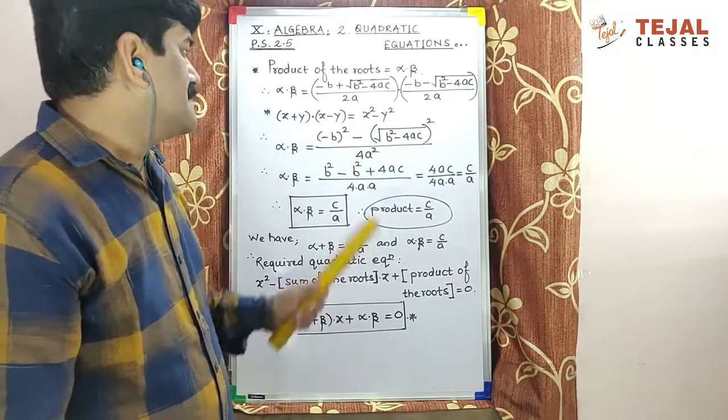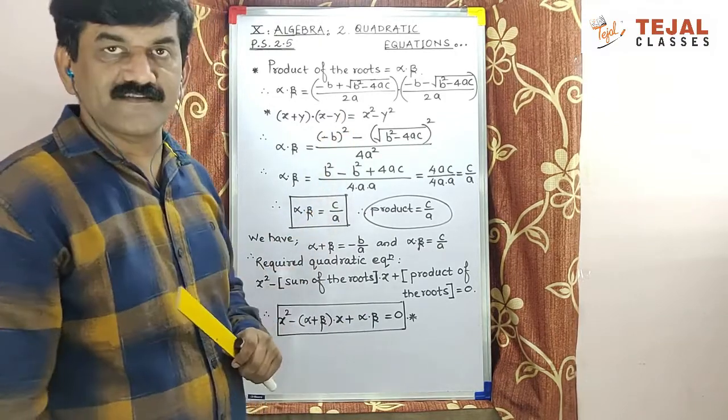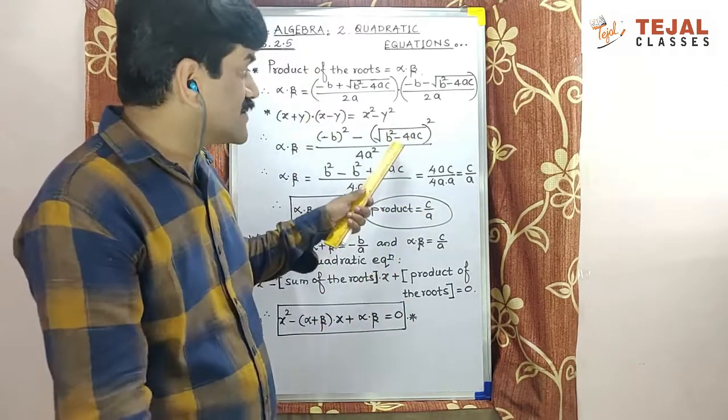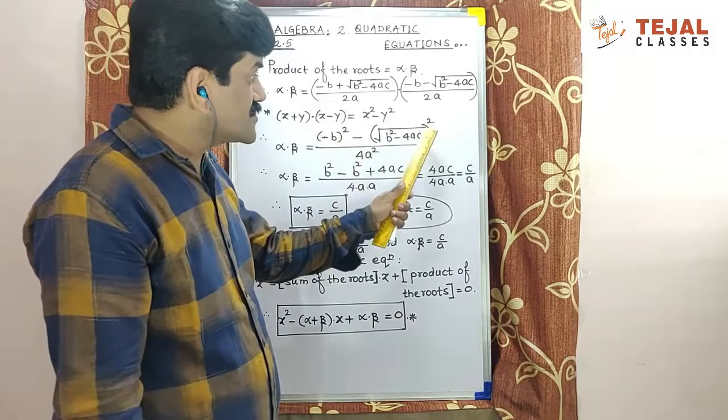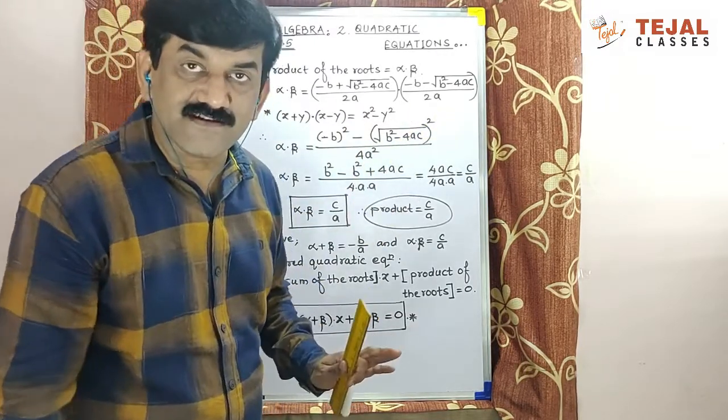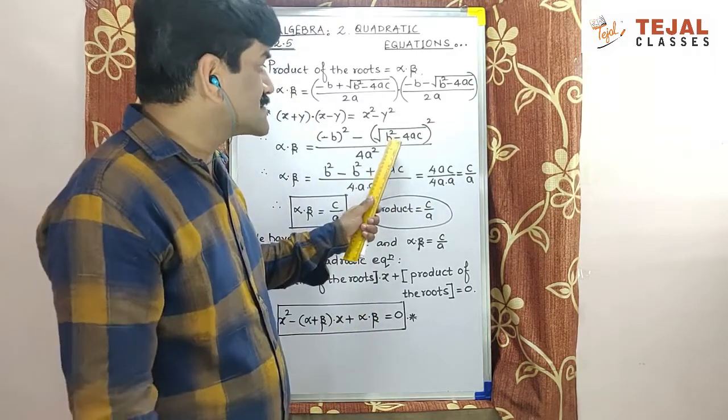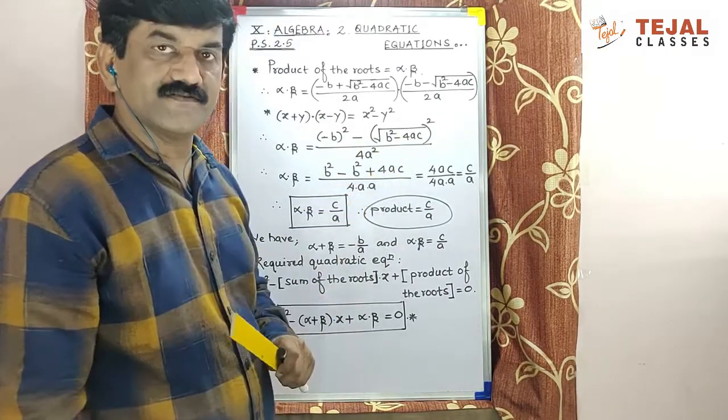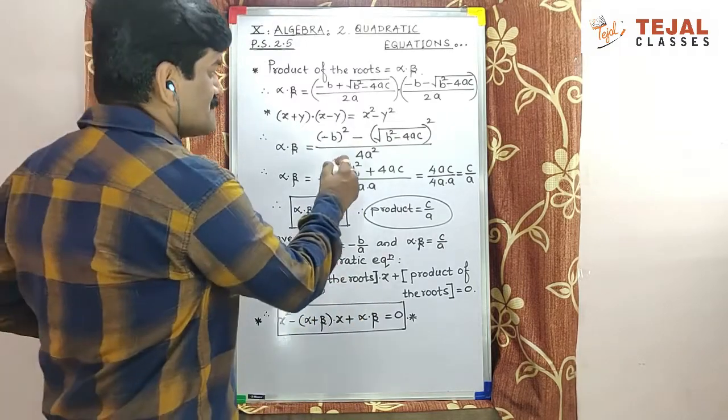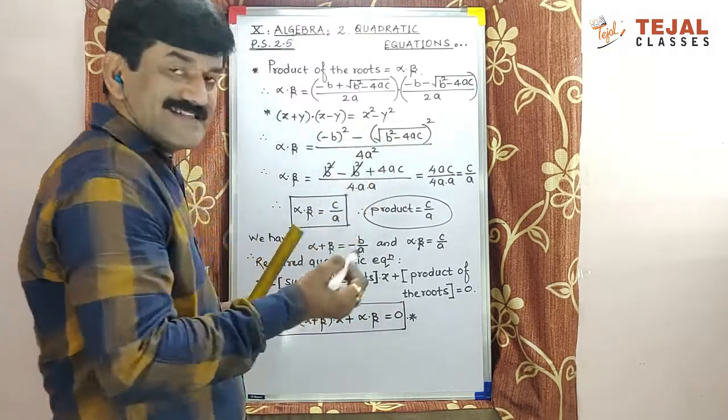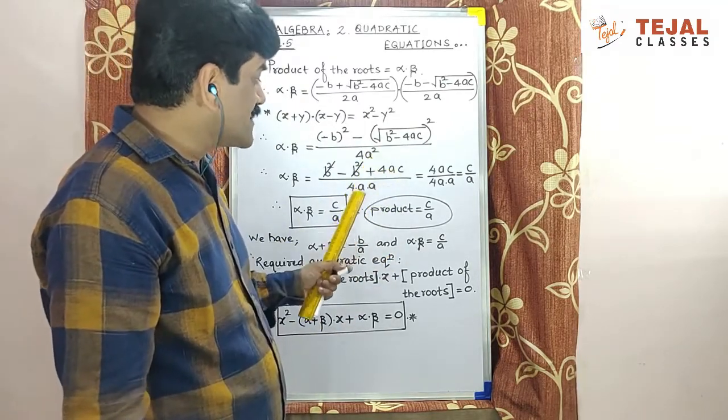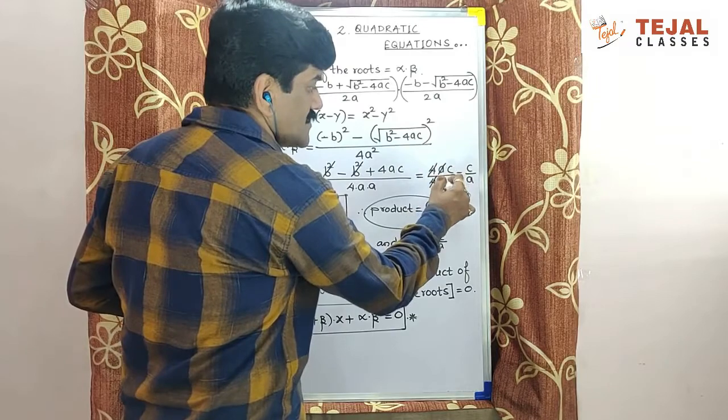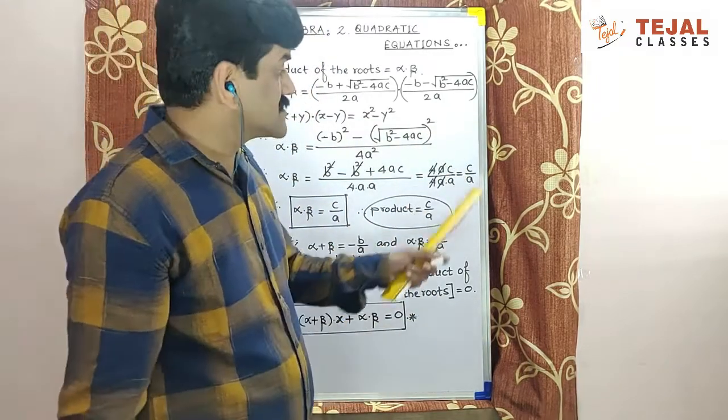Is it clear? Now see, (-b)² value is +b². The whole square of under root means the under root sign will eliminate, and b²-4ac as it is will be copied. But what is negative into negative? Positive. Now see, b² positive, b² negative, cancel. So 4ac/4a², we write as c/(4a×a). Cancel 4a. So remaining elements: c/a.